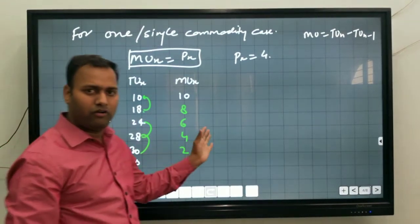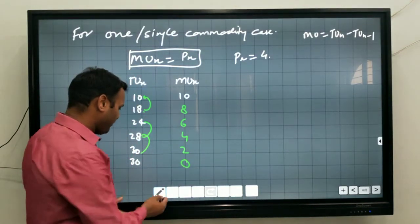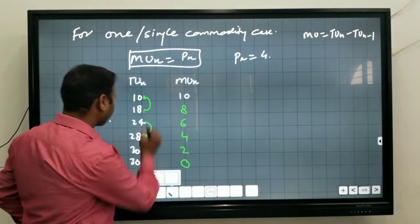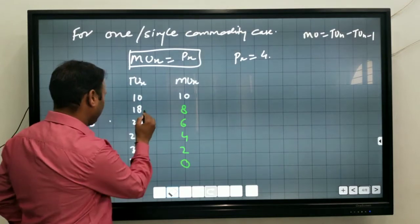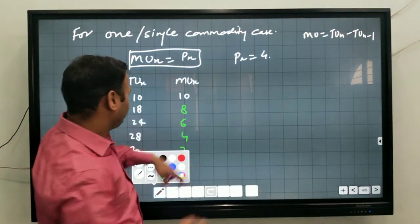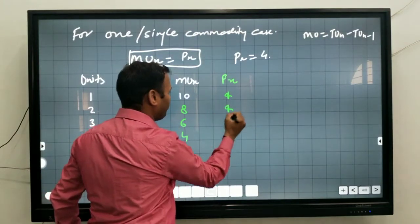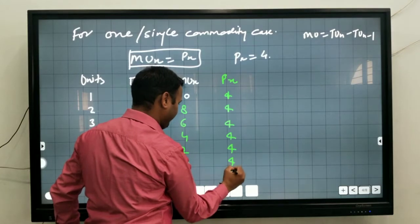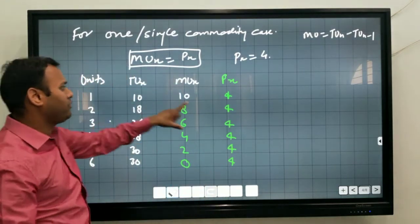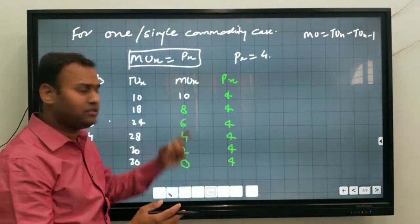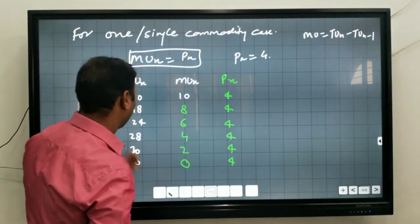In the previous video, we already discussed how to calculate TU and MU, so by using the same formula we can easily calculate. PX is 4 throughout all units — so we write 4, 4, 4 for each unit of the commodity. The PX remains the same across all units.